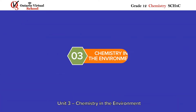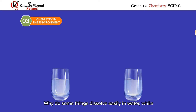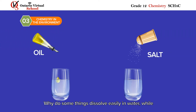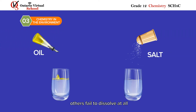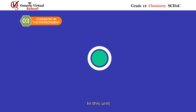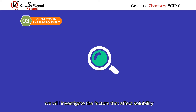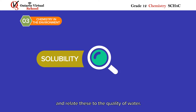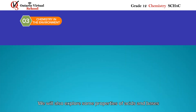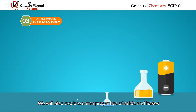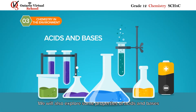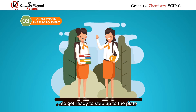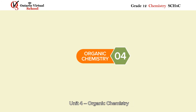Unit three: chemistry in the environment. Why do some things dissolve easily in water while others fail to dissolve at all? In this unit we investigate the factors that affect solubility and relate these to the quality of water. We will also explore some properties of acids and bases, so get ready to step up to the plate.